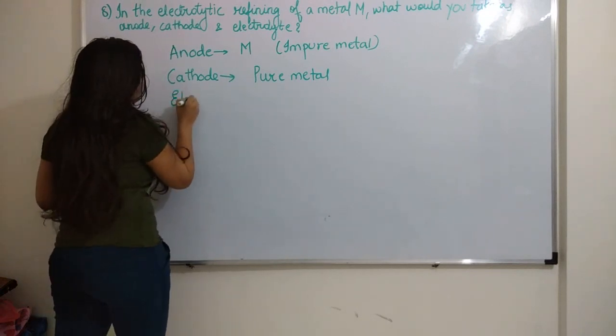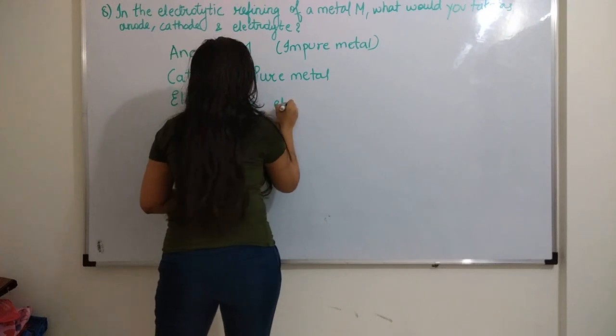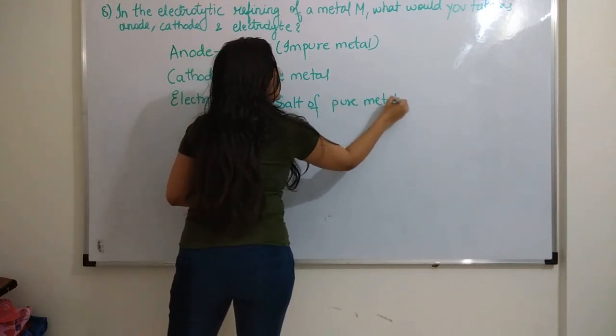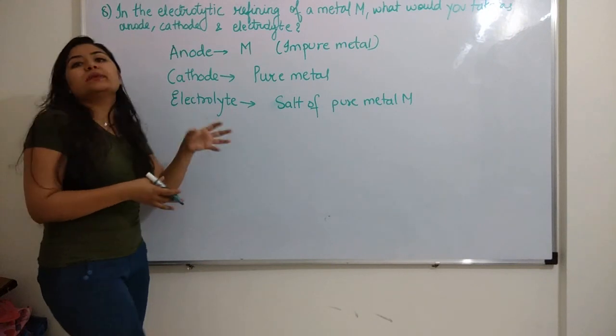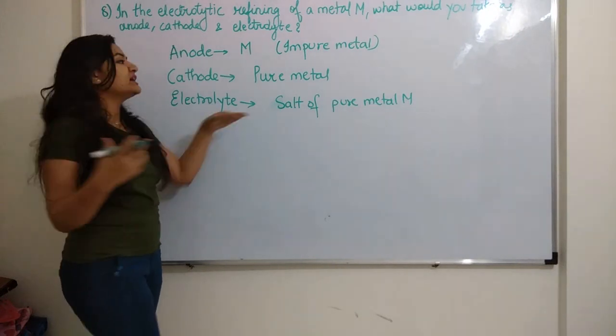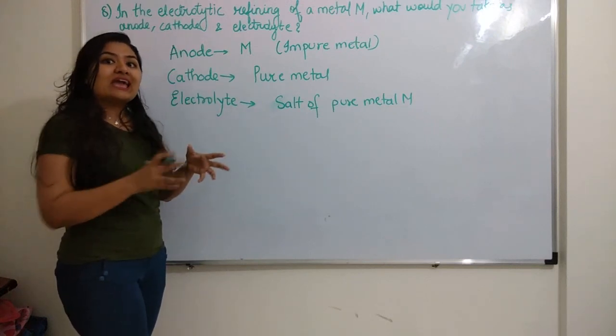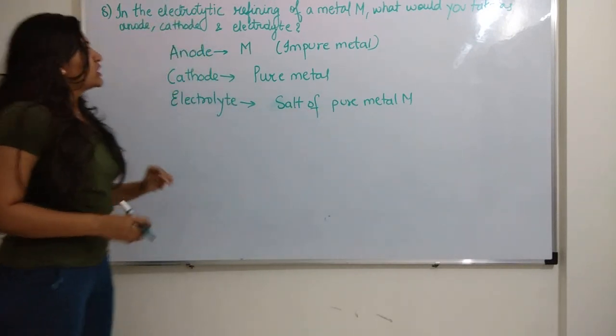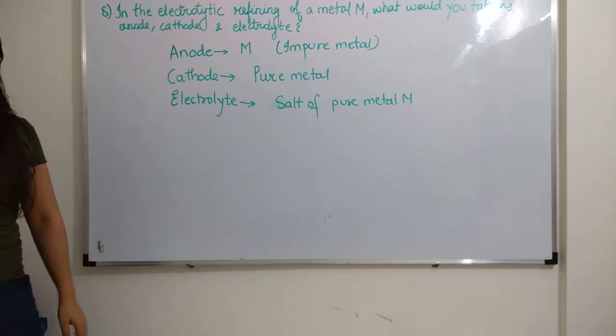If anode is M, which is the impure metal, cathode will be the opposite or we will say pure metal. And that should be of the same form. Then electrolyte will be salt of pure metal M. Copper impure hai, so copper sulfate we will use. It can be M2SO4, MCl, anything. Write down the answers and I will tell you one example which is important as per your board questions.